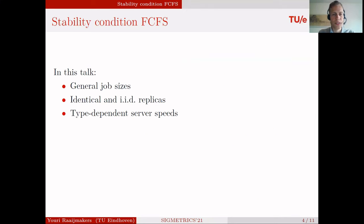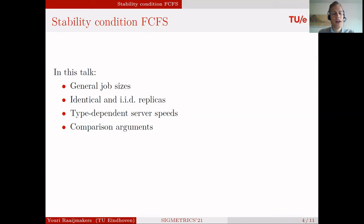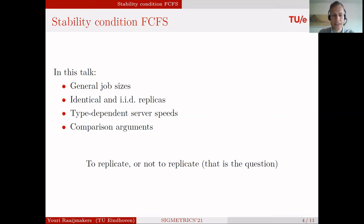Moving to what we will cover in this talk: we assume general job sizes, either identical or IID replicas, and type-dependent server speeds — which is more general than the heterogeneous servers assumed previously. However, this comes with a cost: we are not able to derive the exact stability condition, but we will give comparison arguments, essentially answering the question: should we replicate or not?